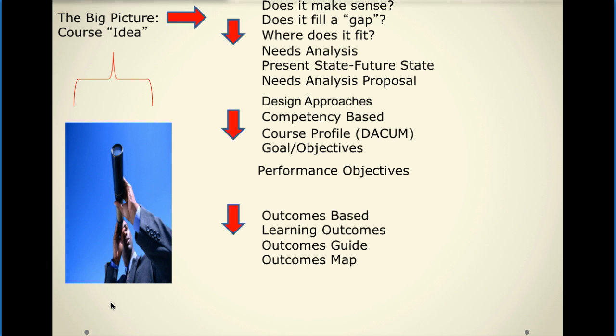The second approach is outcomes-based, and you're working here with learning outcomes, an outcomes guide, and an outcomes map. Now this is a very high-level kind of summary of the approach that you're going to be taking. Don't worry too much if it's a little bit confusing for you, because we'll be spending three full weeks on either competency-based and outcomes-based approaches, and I'll do a very comprehensive kitchen table talk on these things so that you will have a very clear idea of what they are and which one makes sense for you for the course that you want to design or the workshop that you want to design.